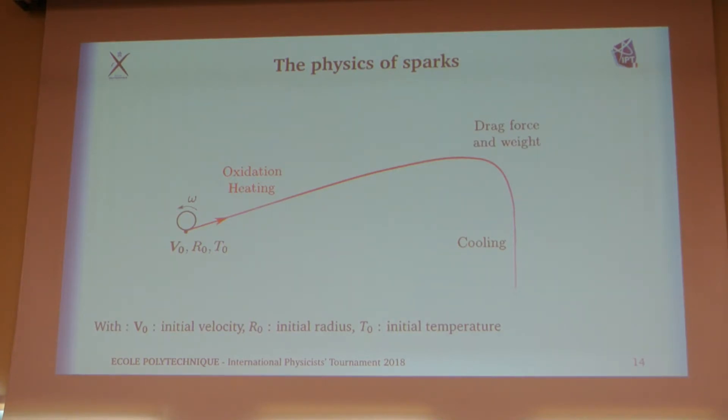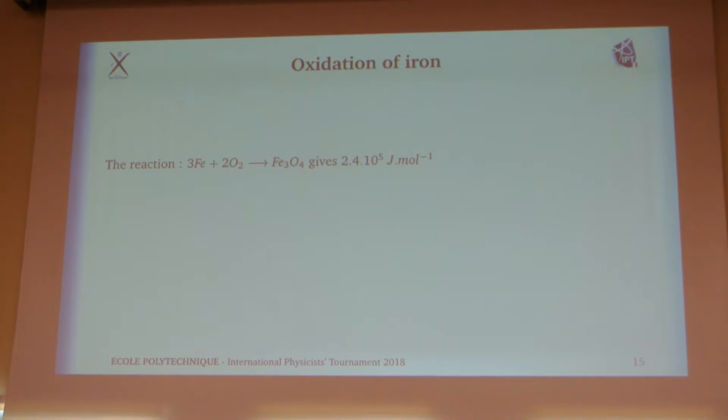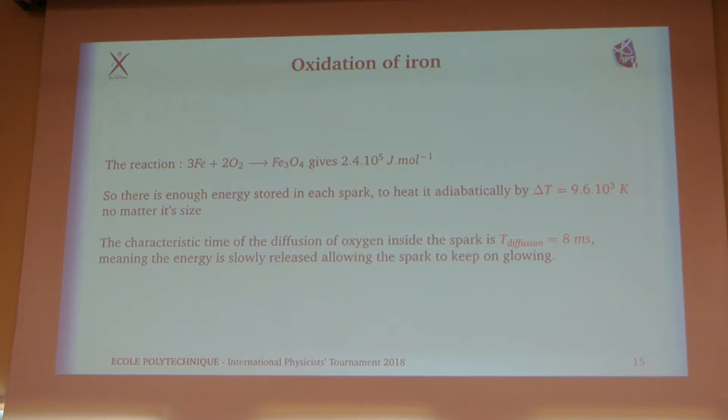There is also oxidation occurring at the same time as the cooling. Just to give a little bit more of orders of magnitude, if we take the basic reaction of oxidation for the sparks, we can calculate that there is enough energy in a single spark to heat it adiabatically by about 10,000 Kelvin. It is just the good order of magnitude. Also, the characteristic time of oxidation may be the characteristic time of diffusion, which is about 8 milliseconds. It is also a low enough time for this phenomenon to have an effect.